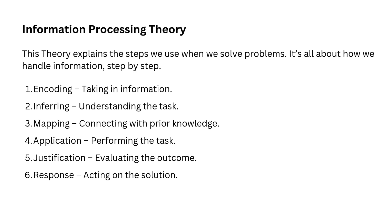Imagine that you are preparing a meal for dinner. According to Sternberg's Information Processing Theory, your brain goes through a series of steps, much like following a recipe. The first step is encoding. You look at the recipe and your brain identifies the important information — reading the ingredients, the cooking time, and the method. Your brain is encoding, or taking in, the information.